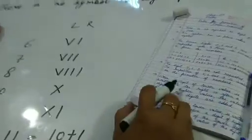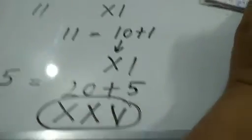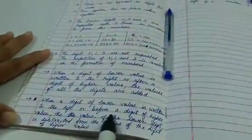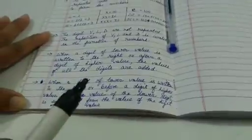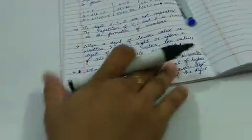So the rule: when a digit of a lower value is written to the right, after the digit of higher value, then the values are added. The next point is the complete opposite: when a digit of a lower value is written to the left, and before a digit of the higher value, the value of the lower digit is subtracted from the value of the higher digit.